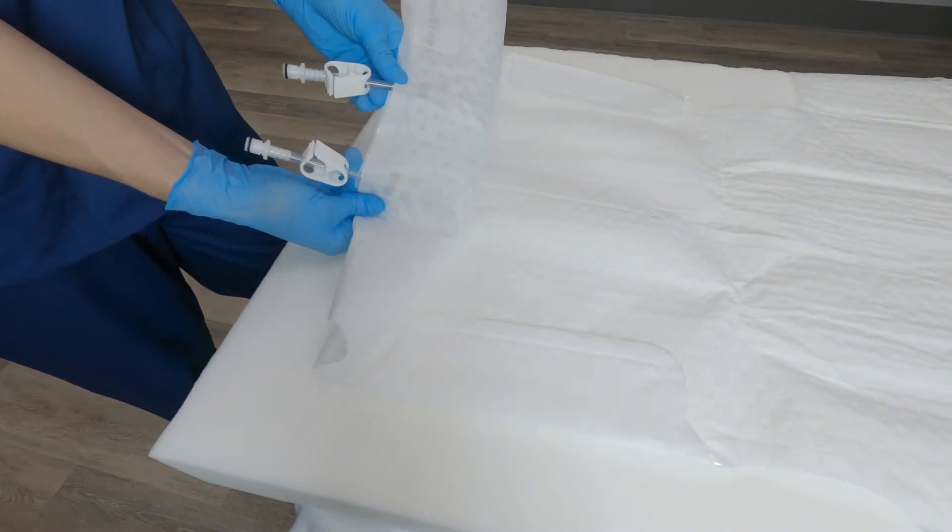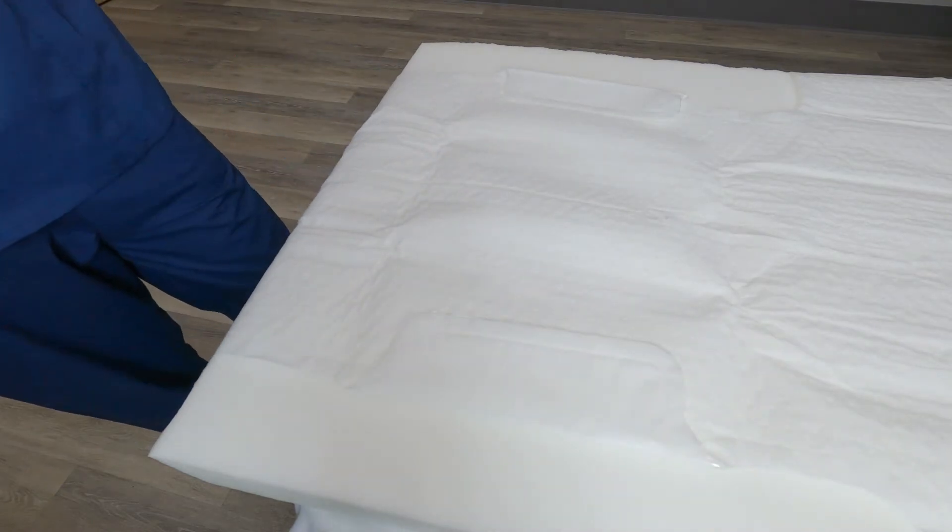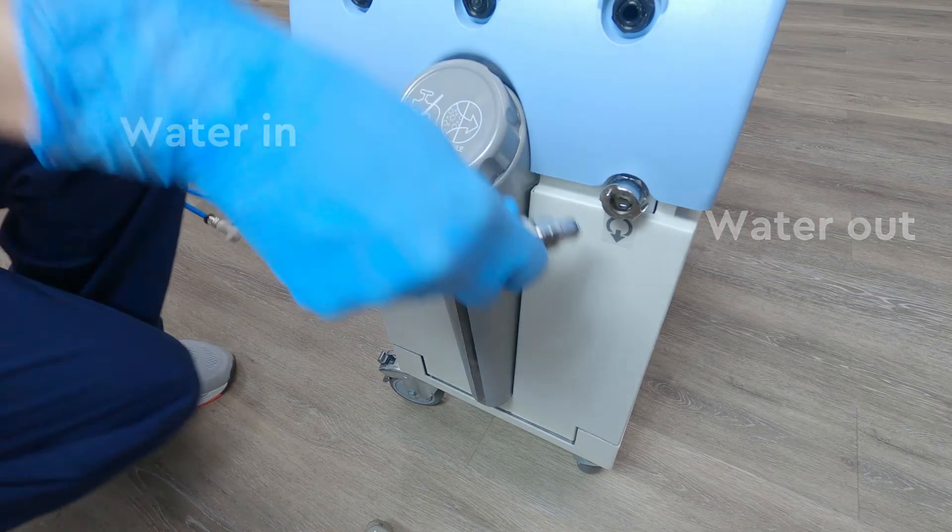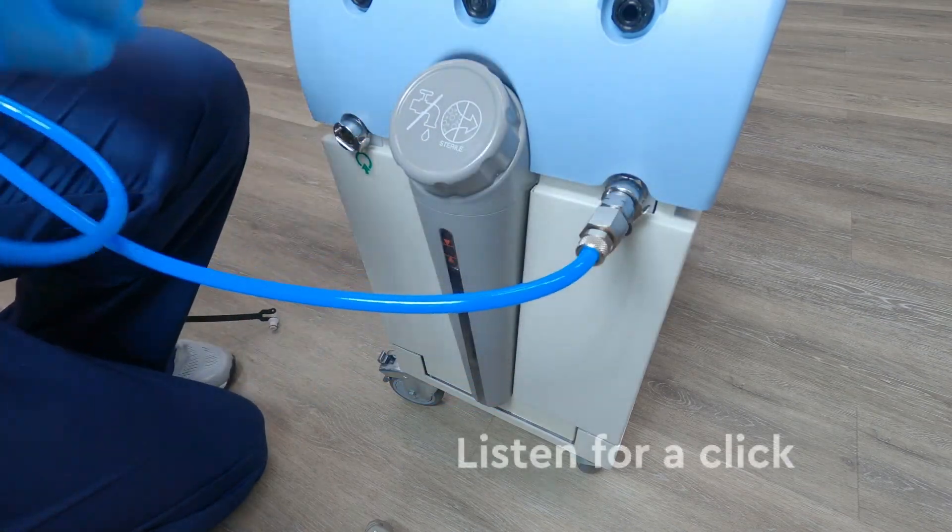Confirm that the clamps are open to allow the water to circulate. Connect the hoses to the machine on one end by connecting metal to metal. Listen for the click.